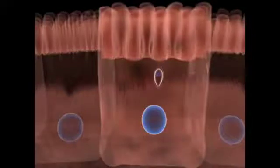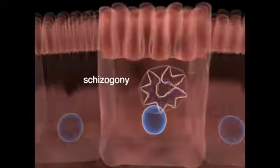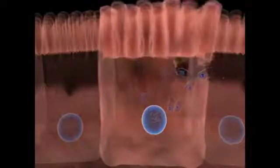Each bradyzoite will settle inside a parasitophorous vacuole and start to divide by schizogony. In this method of division, many nuclear divisions take place, and in the end, the cytoplasm and organelles are equally distributed among the daughter cells, called merozoites. The merozoites leave the host cell and invade new ones, repeating the process.